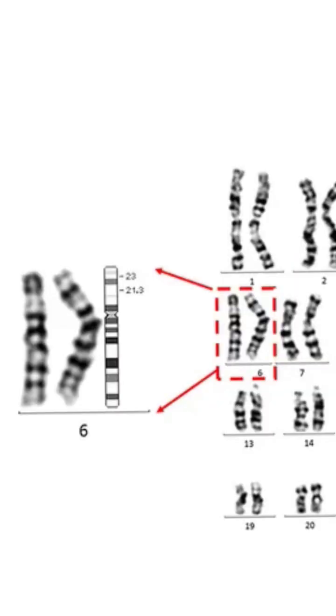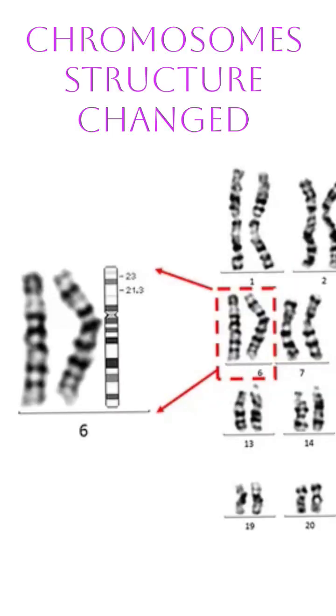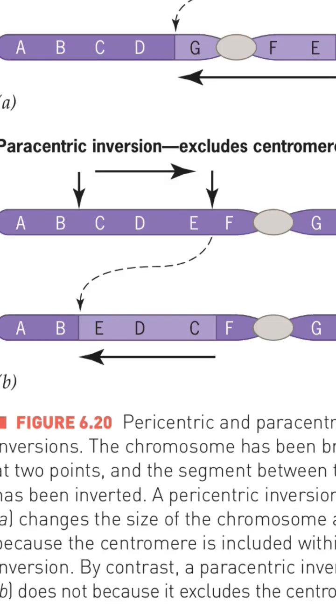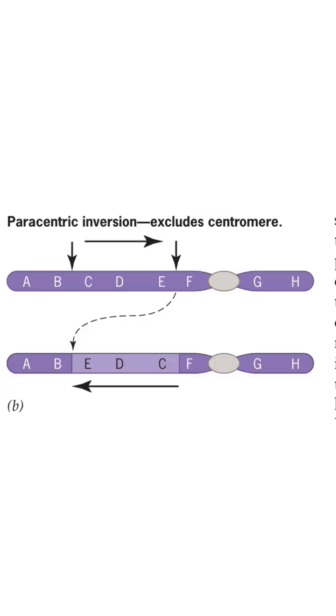Paracentric inversion excludes the centromere. The inverted segment does not include the centromere. For example, the segment C to E is flipped to E, D, C, and the centromere remains untouched. This results in the chromosome arm length remaining the same, making it harder to detect under the microscope.